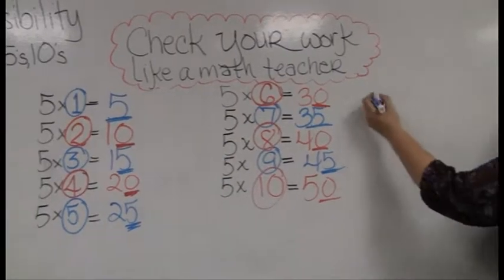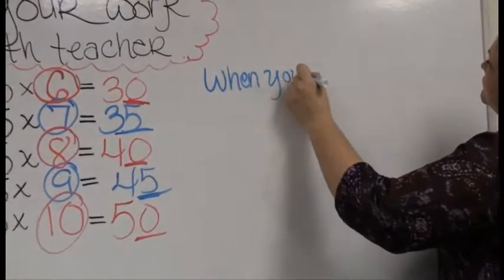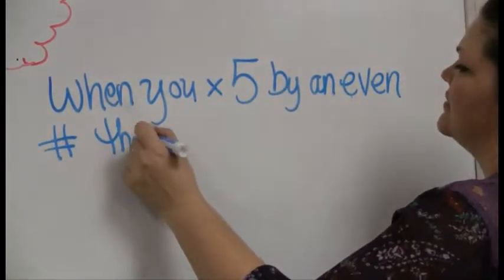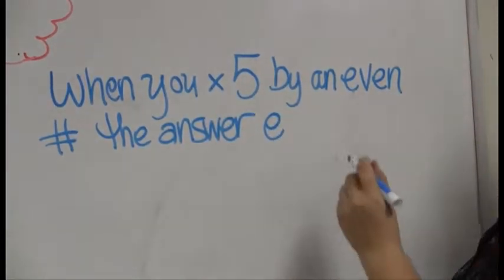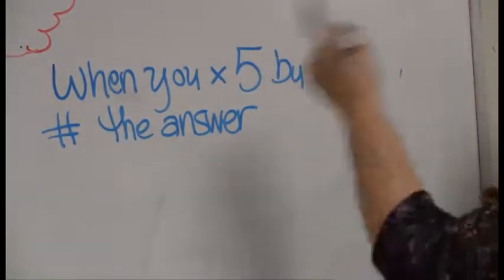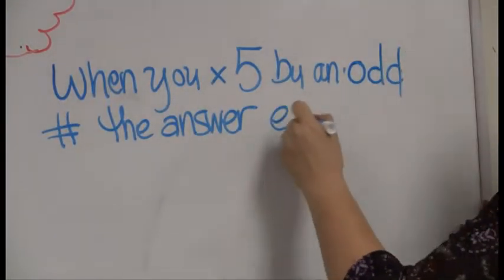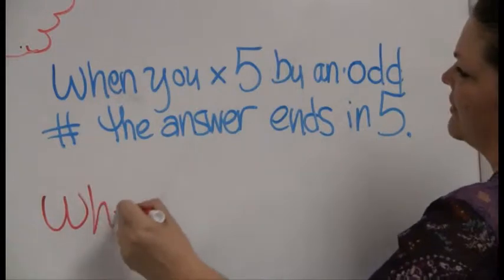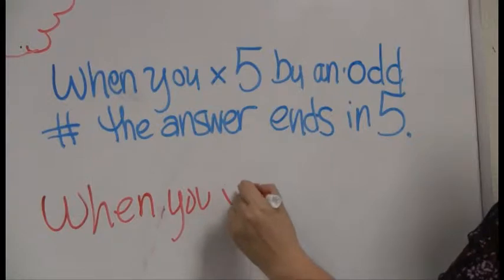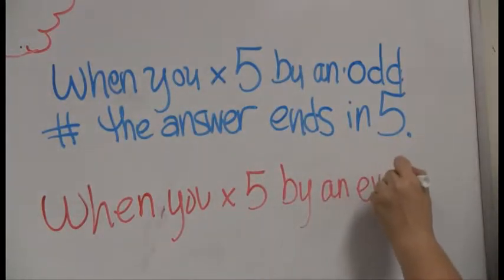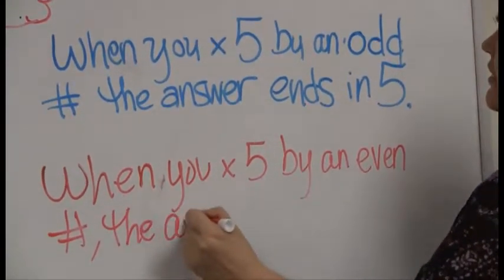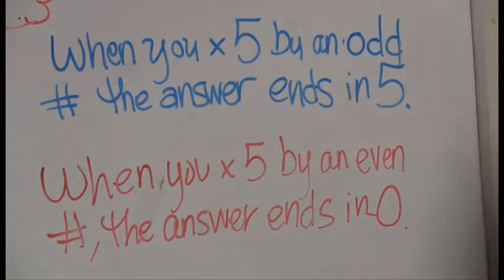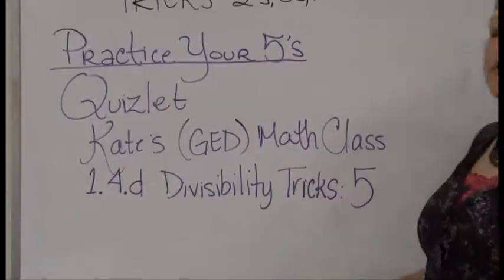So the rules are: when you multiply 5 by an odd number, the answer ends in 5; when you multiply 5 by an even number, the answer ends in 0 — which makes sense because we learned earlier that 0 is even. So 5 times 8 cannot be 45 — an even times 5 must end in zero, giving us 40. Hopefully you won't mix up your fives anymore!